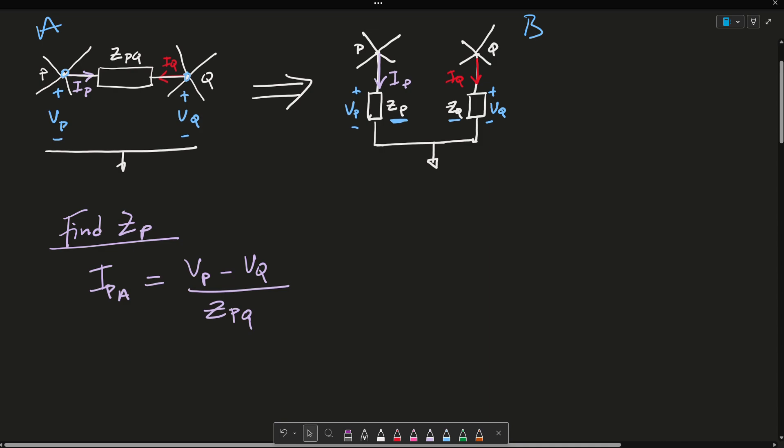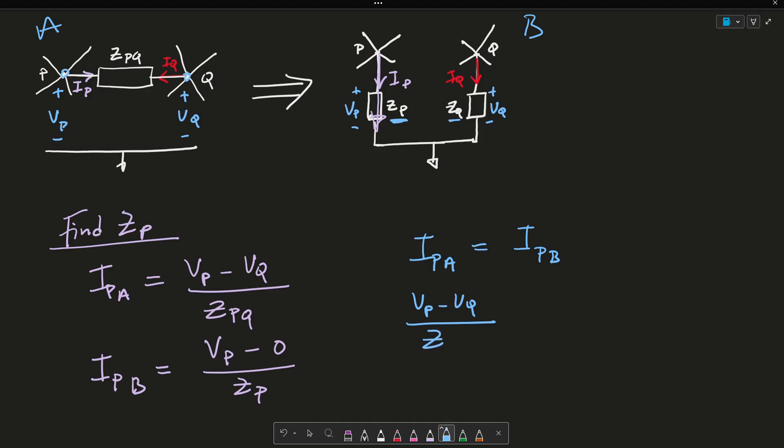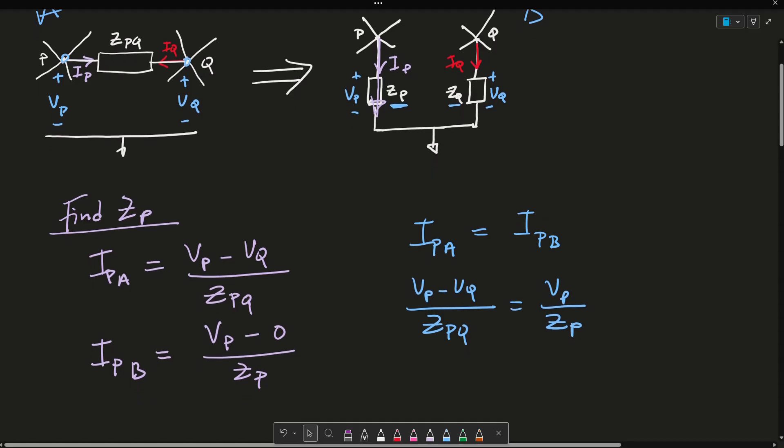And we know that from our circuit B, IPB is simply just VP minus 0 over ZP. Or again, the current IP that's flowing through this impedance is the voltage VP divided by the impedance ZP. So in order to make these two circuits equal to each other, all we need to do is simply equate IPA equals IPB.